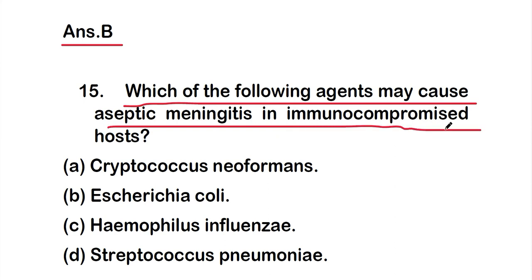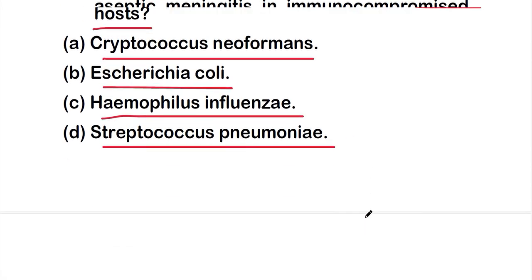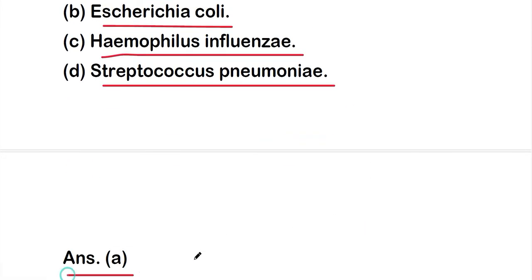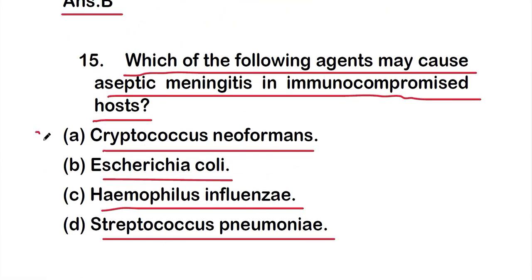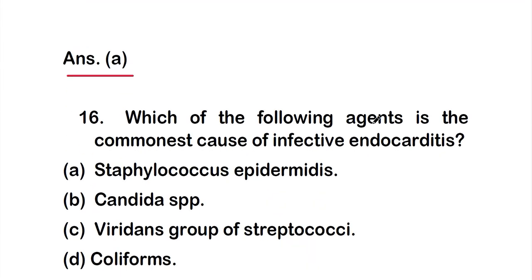Question 15: Which of the following agents may cause aseptic meningitis in an immunocompromised host? Options: option A: Cryptococcus neoformans; option B: Escherichia coli; option C: Haemophilus influenzae; option D: Streptococcus pneumoniae. The right answer is option A: Cryptococcus neoformans.